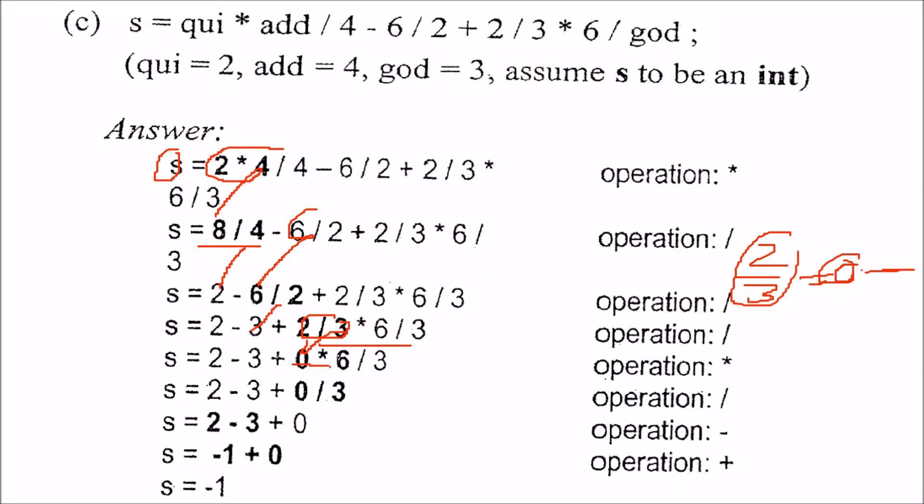And 0 into 6 is what? Again 0. And 0 by 3 is again 0. Now, we are only left with 2 minus 3. 2 minus 3 is minus 1. And since it is an integer, s can be minus 1.